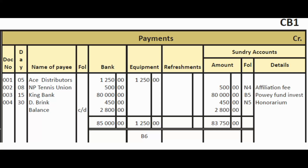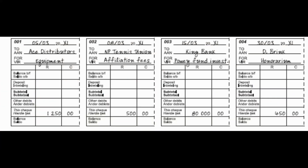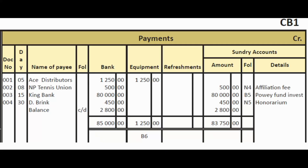The third payment: we invest the $80,000 received from the estate of Powie. We write a cheque to King Bank for $80,000. On the credit side of the cash book, write King Bank, $80,000 in the bank column, and $80,000 in the sundry accounts column. The details entry is 'Powie Fund Investment.'